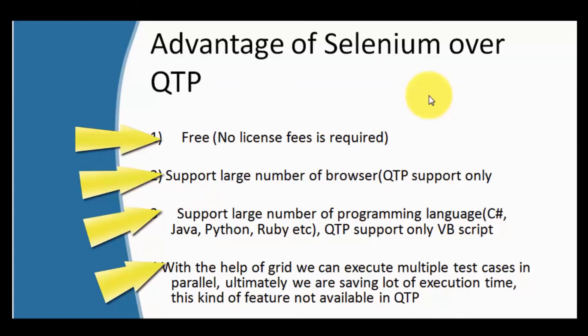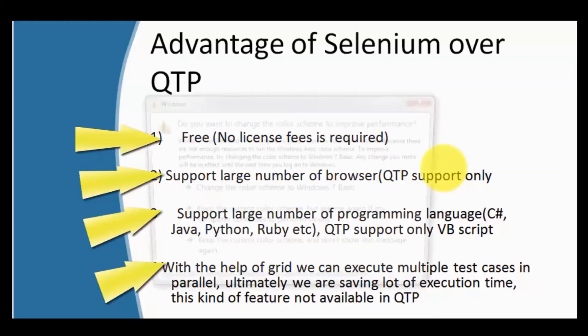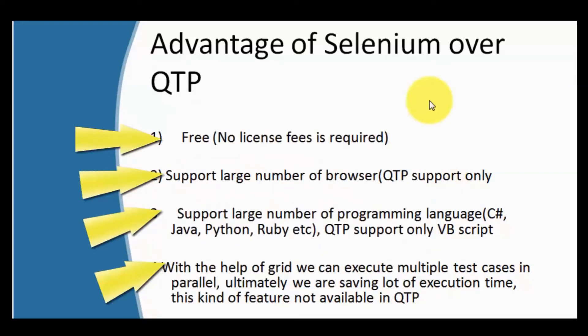The fourth advantage is that Selenium has a component called Selenium Grid. With Selenium Grid we can execute multiple test cases in parallel, saving a lot of time in execution. This feature is not available in QTP. For example, if I have 100 automated test cases and each test case takes 1 minute for execution.